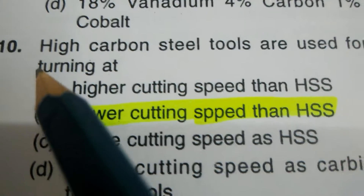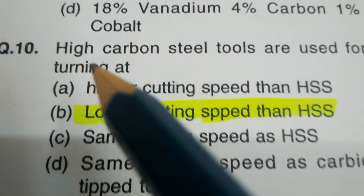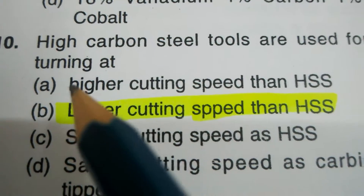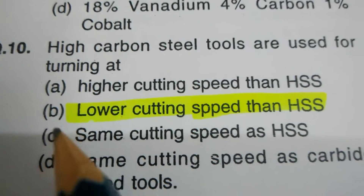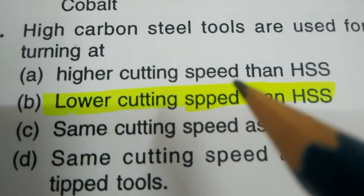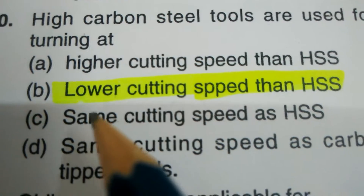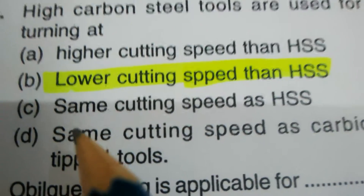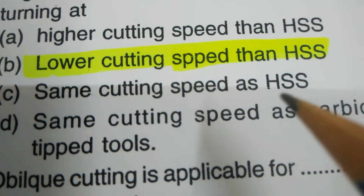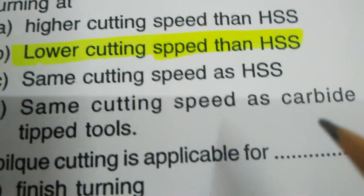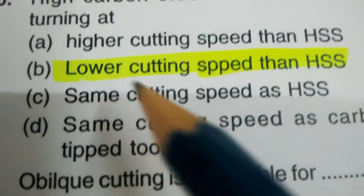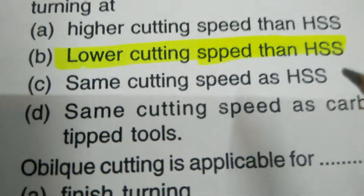Question number ten. High carbon steel tools are used for turning at: options are higher cutting speed than high speed steel, lower cutting speed than high speed steel, same cutting speed as high speed steel, same cutting speed as carbide tip tool. The correct answer is: lower cutting speed than high speed steel.